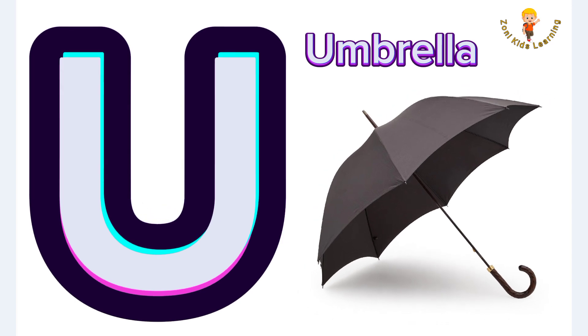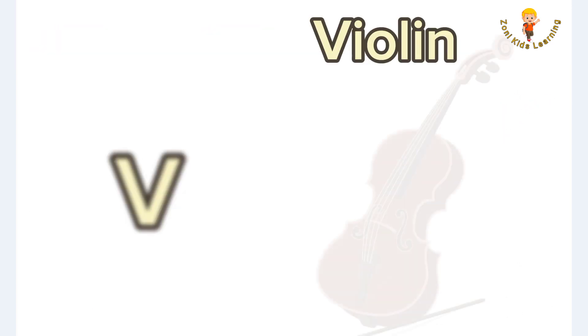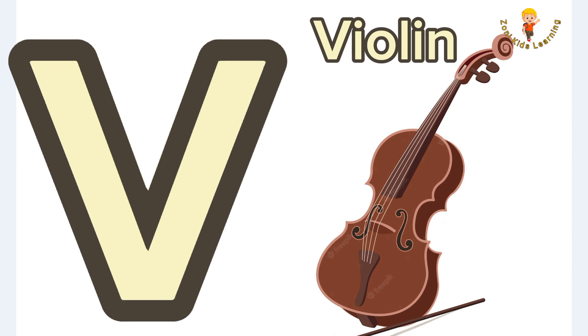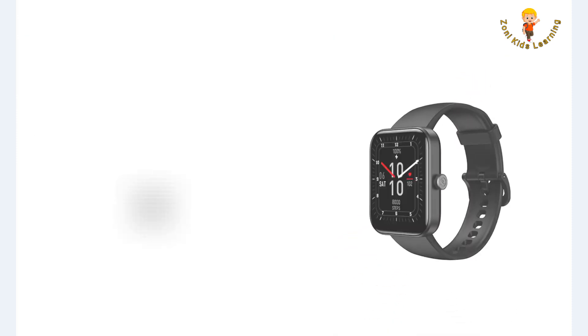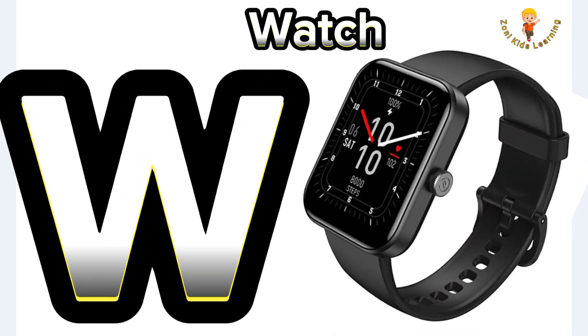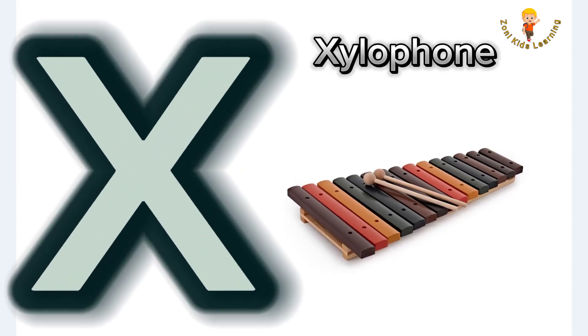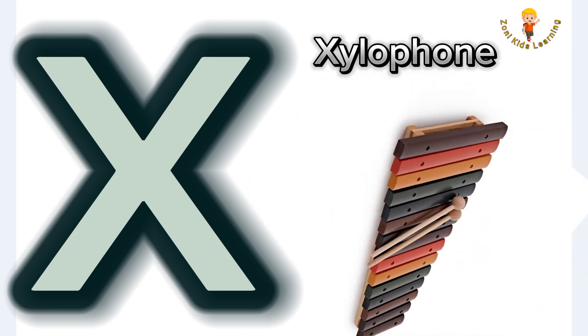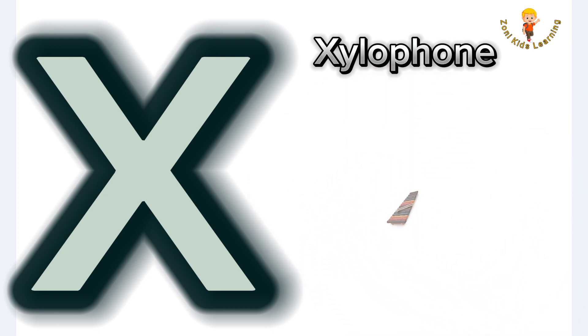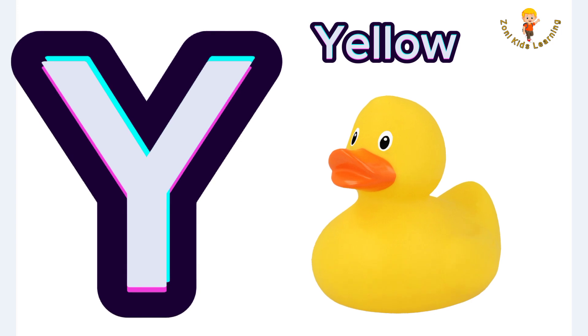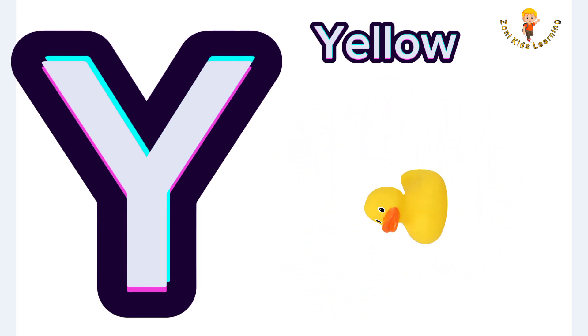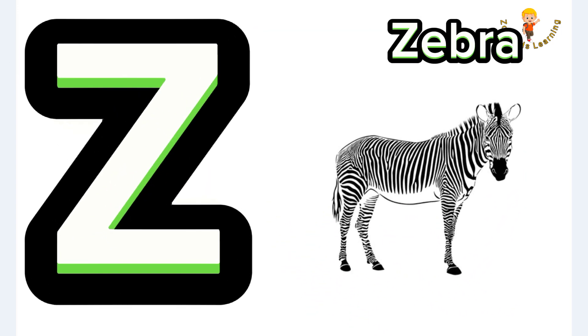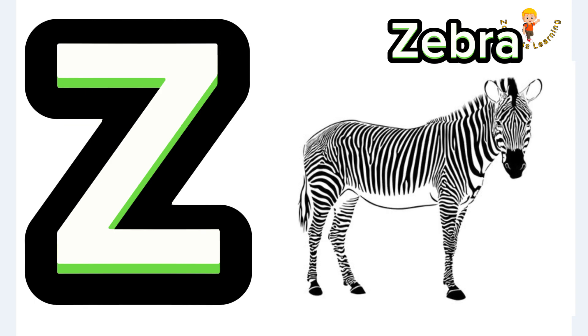U is for umbrella, u-u-umbrella. V is for violin, v-v-violin. W is for watch, w-w-watch. X is for xylophone, z-z-xylophone. Y is for yellow, y-y-yellow. Z is for zebra, z-z-zebra.